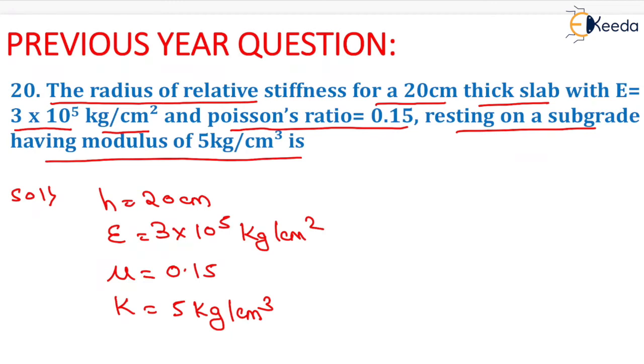Now we have to calculate the radius of relative stiffness whose formula is [Eh³/(12k(1-μ²))]^(1/4). Now we will put the value of E, h, k, and μ.